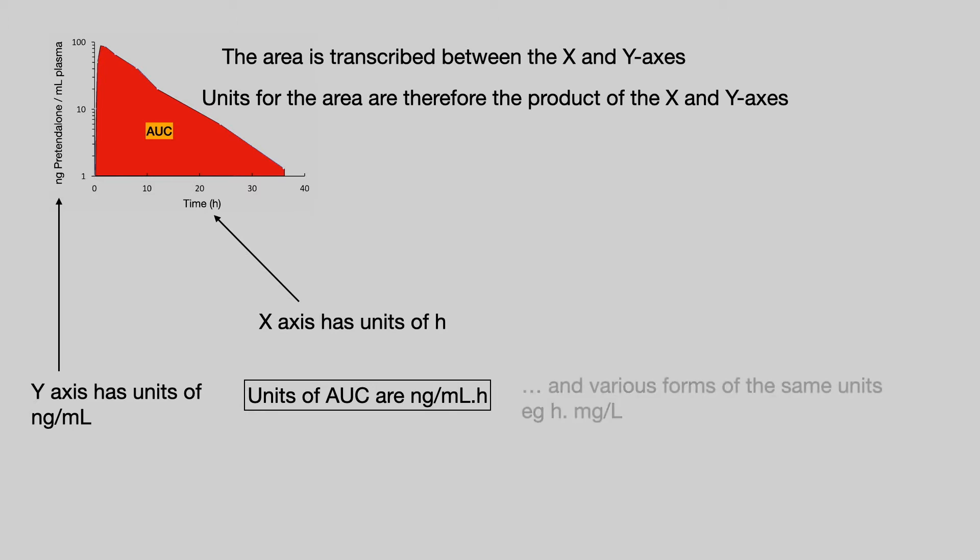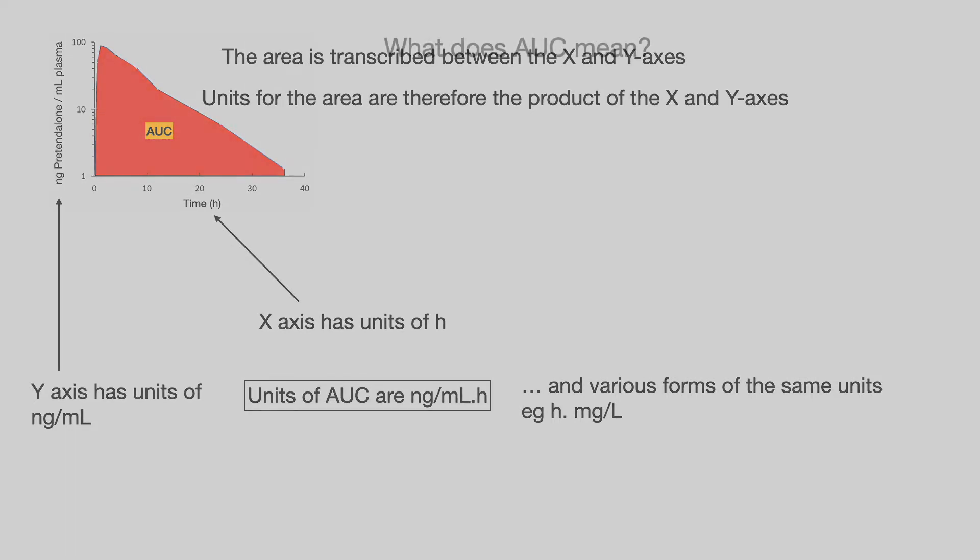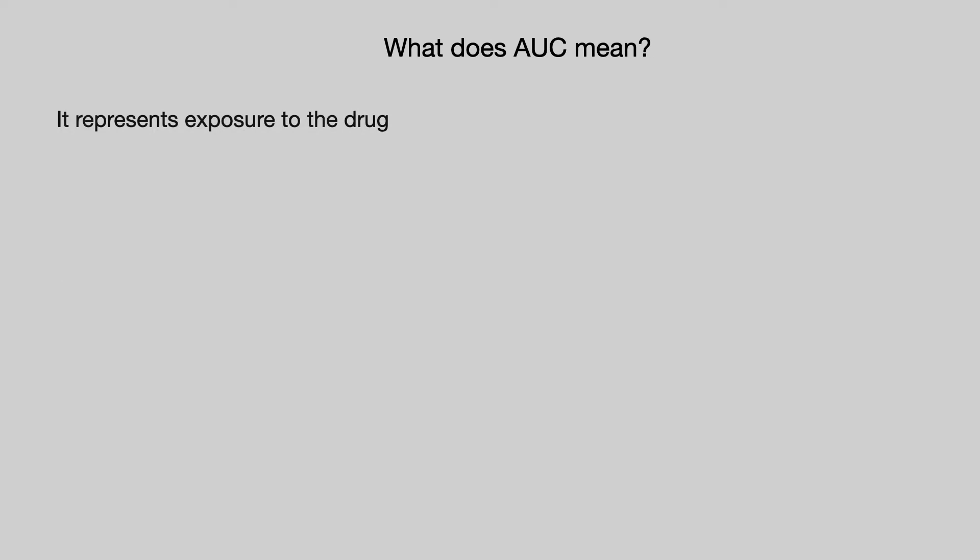You may see all sorts of variations on this — for example, hours times milligrams per litre — but they all come out to mean the same thing. So, what does the AUC mean? It represents exposure to the drug.